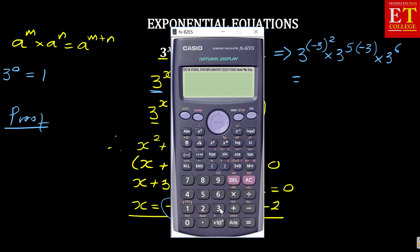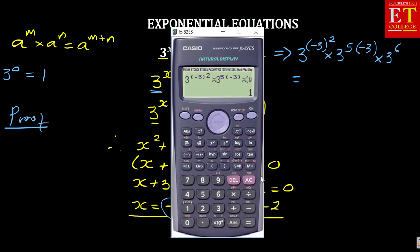If I can punch in 3 to the power of (−3) squared, which is also squared, then forward and times 3 to the power of 5 times negative 3, I've got that, and then times 3 to the power of 6 — and then it's giving me 1.